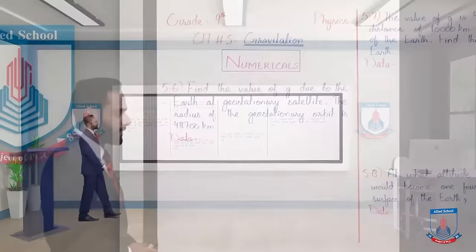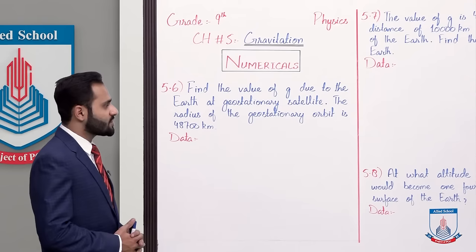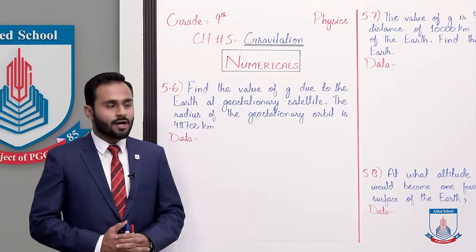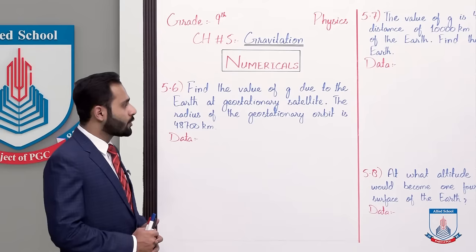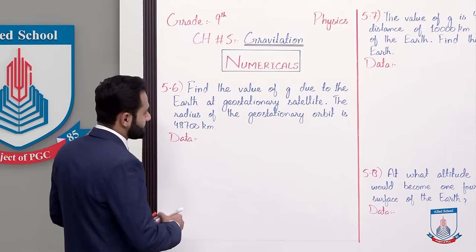Chapter number 5, Gravitation, numerical 5.6: find the value of g due to the earth at a geostationary satellite. The radius of the geostationary orbit is 48,700 km. So we have to find the value of g, and the radius of the geostationary orbit has been given as 48,700 km.